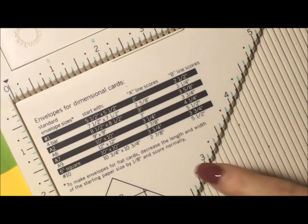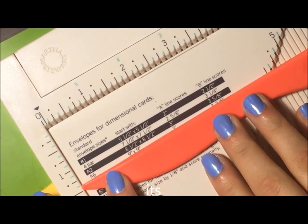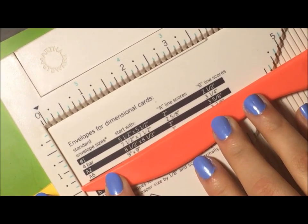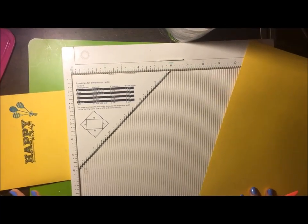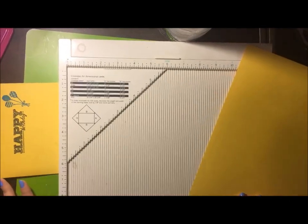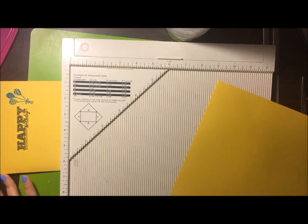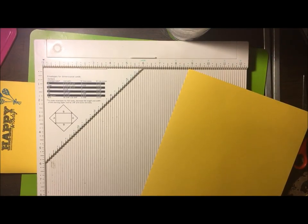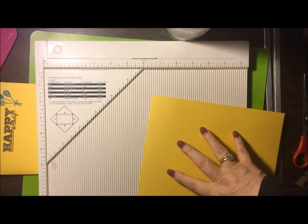We're going to zoom in a little bit so I can show you guys what it says on there. It says A2 is the card we want to make, and what kind of paper do you use? 8 1/2 by 11 is the size. And our A line will be scored at 3 inches, and our B line will be scored at 3 and 5 eighths inches.